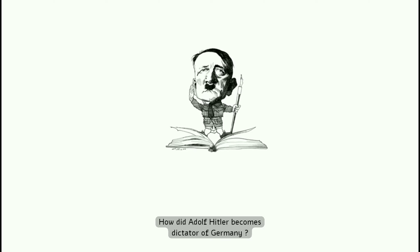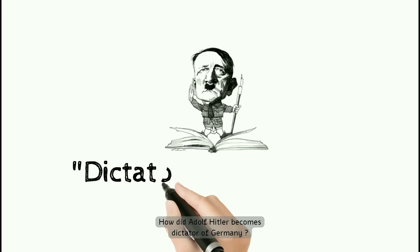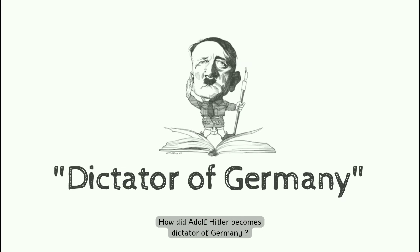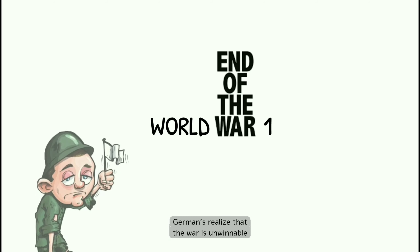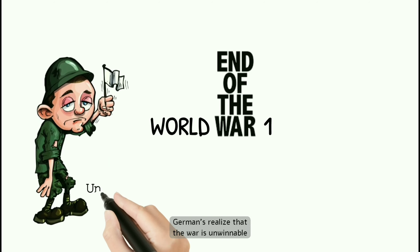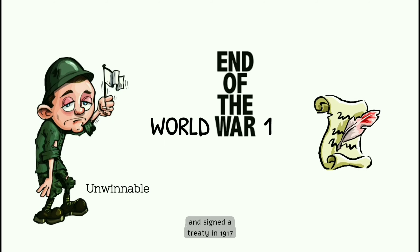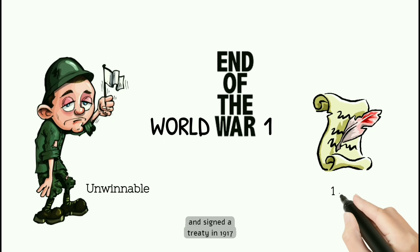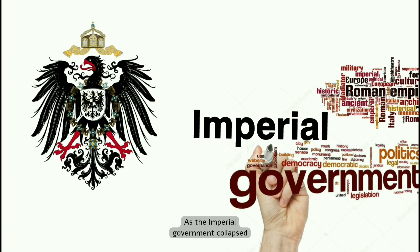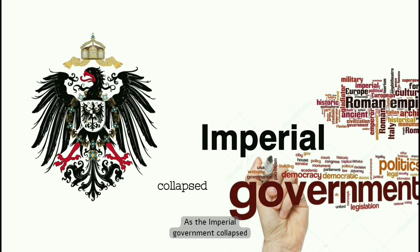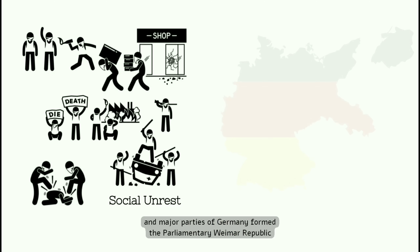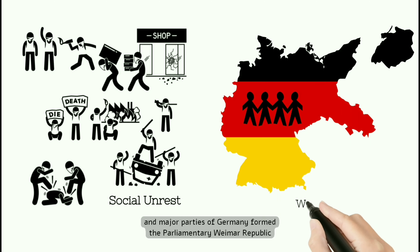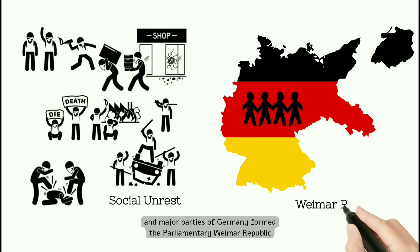How did Adolf Hitler become dictator of Germany? At the end of World War I, Germans realized that the war was unwinnable and signed a treaty in 1917. As the imperial government collapsed, it led to social unrest, and major parties of Germany formed the parliamentary Weimar Republic.